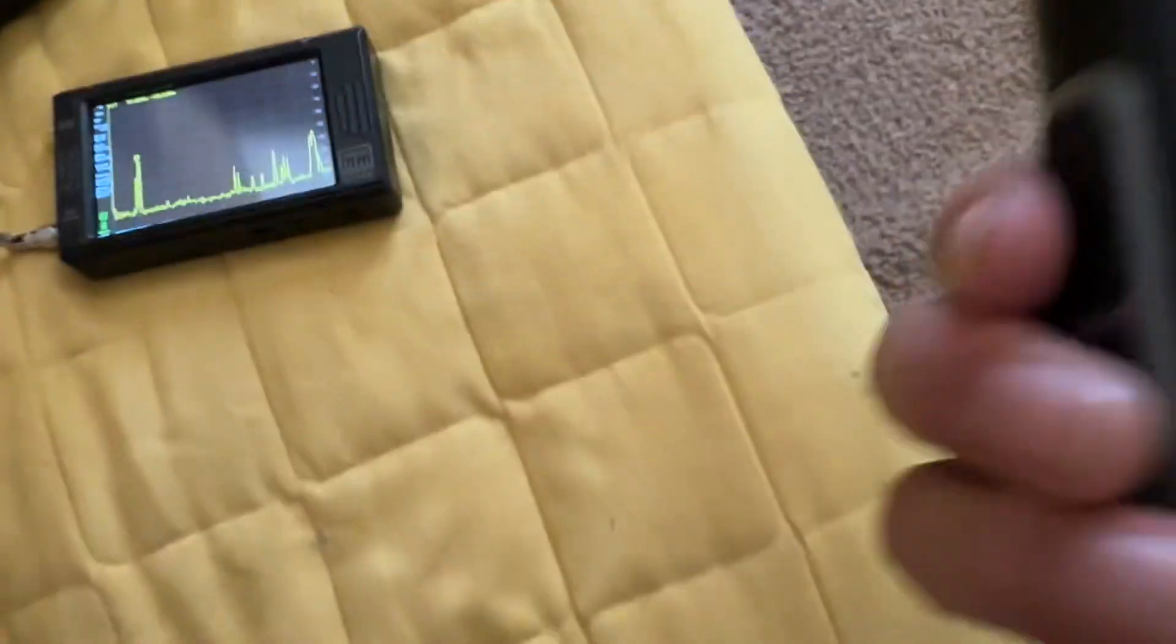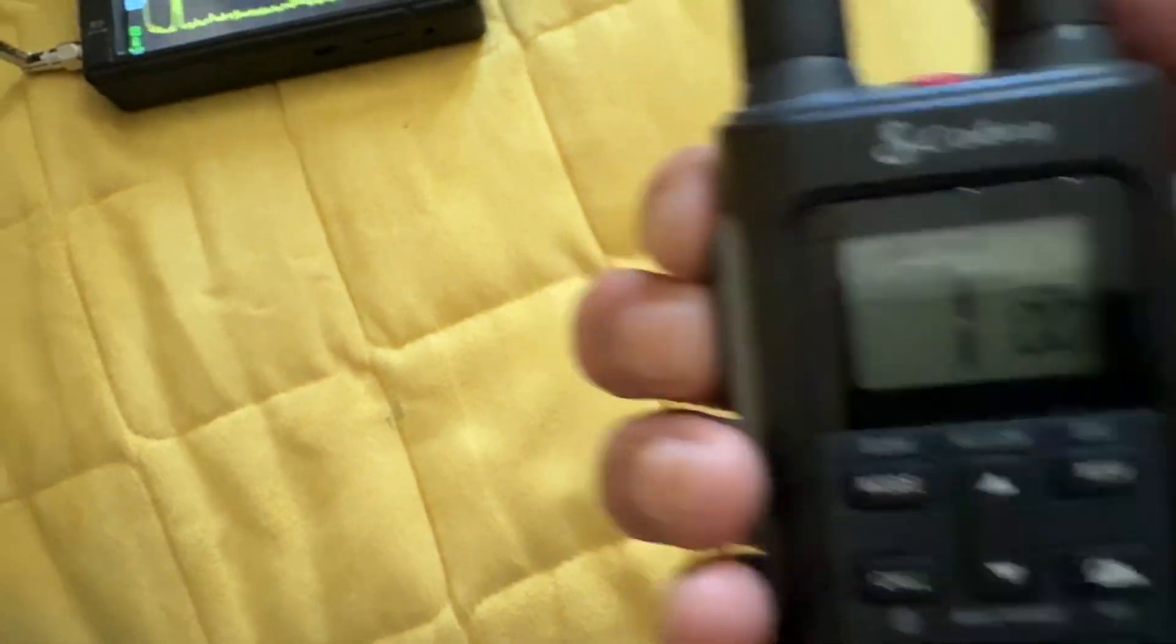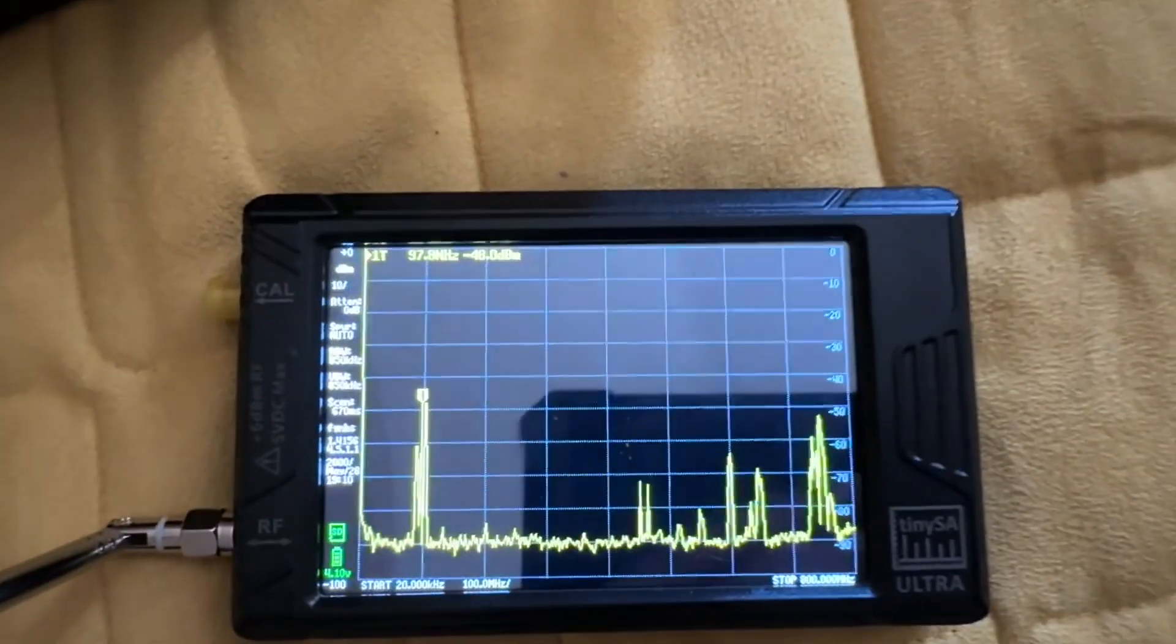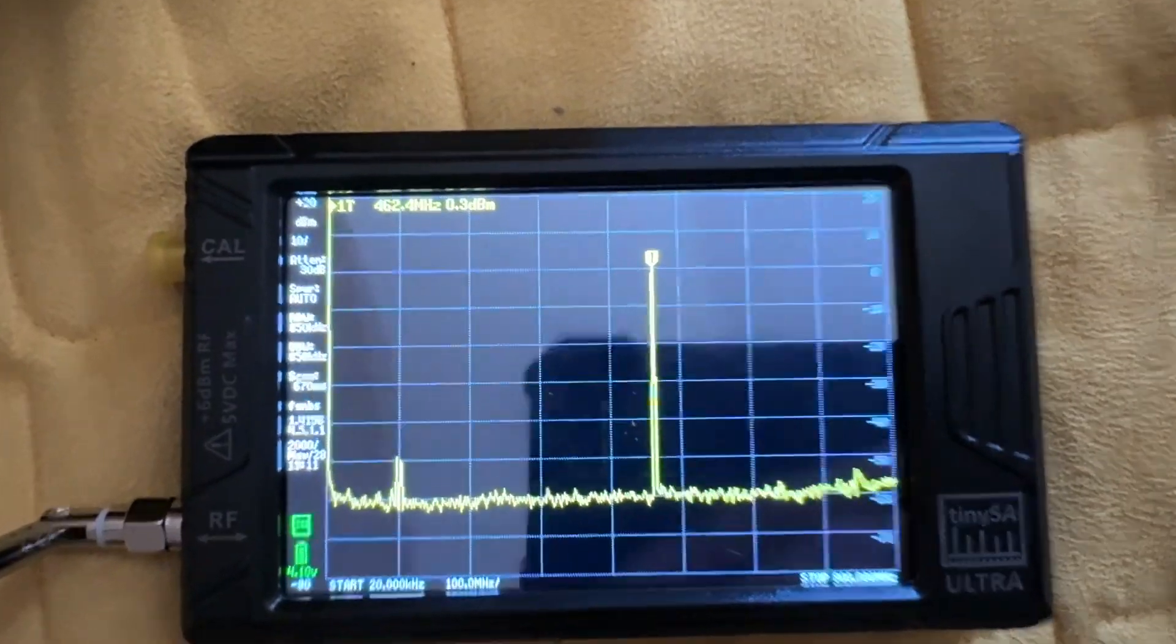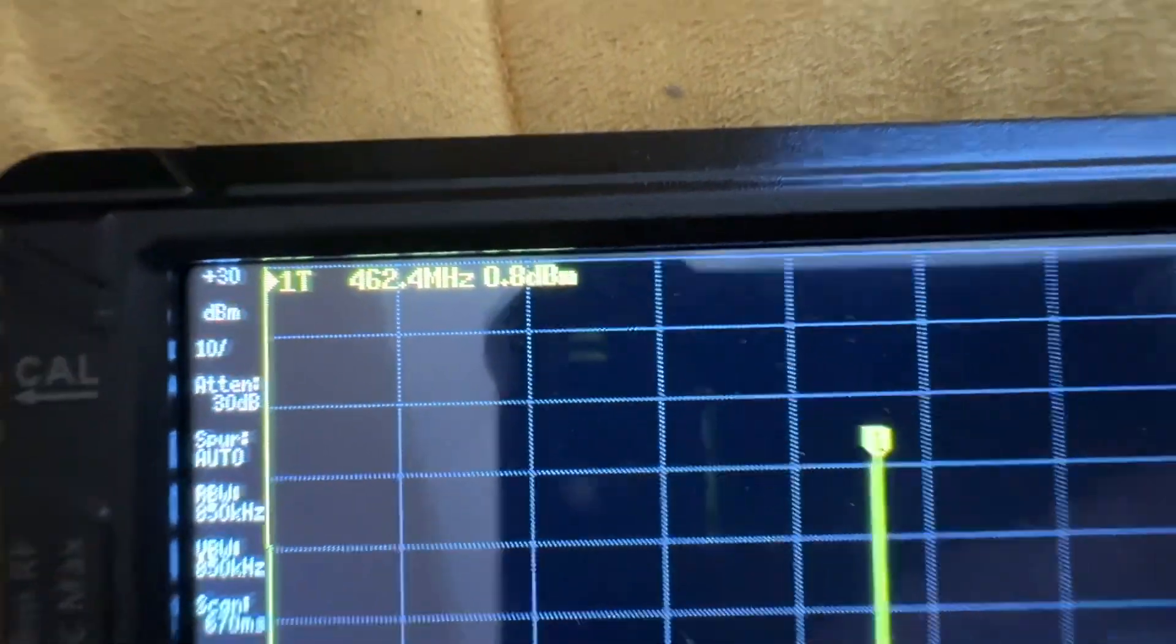First of all, let's try this Cobra radio. These go around, I think, in the hundreds of megahertz range for their transmission frequency. I'm going to turn it on and let's see where it transmits. So here it goes. It looks like it transmits at 462.3 megahertz.